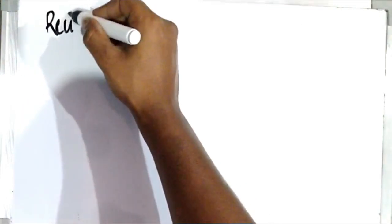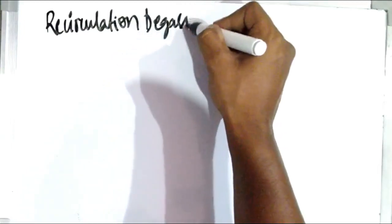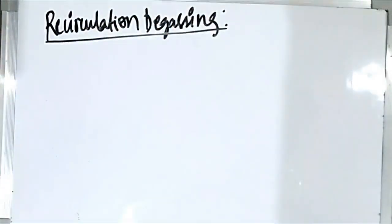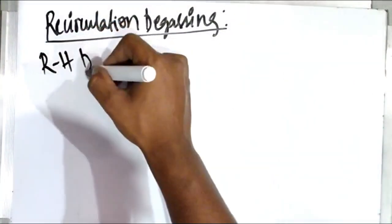Now we'll discuss the third type — recirculation degassing — which is one of the most important types and is commonly used in steel plants. In this method, the molten steel is allowed to circulate continuously in the vacuum chamber in order to degas it. There are two types in recirculation degassing: RH and DH. We'll discuss the RH degasser in this video.